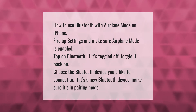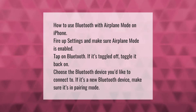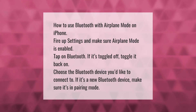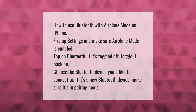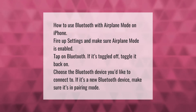How to use Bluetooth with airplane mode on iPhone: fire up Settings and make sure airplane mode is enabled. Tap on Bluetooth — if it's toggled off, toggle it back on. Choose the Bluetooth device you'd like to connect to. If it's a new Bluetooth device, make sure it's in pairing mode.